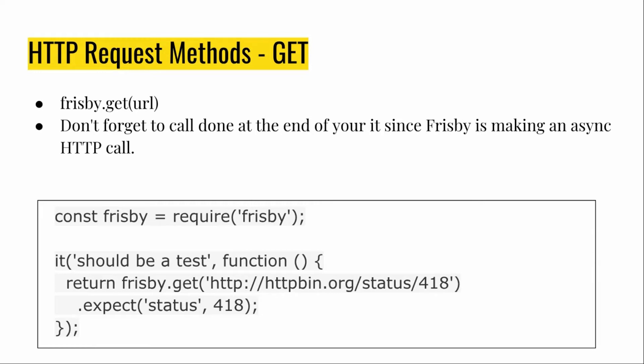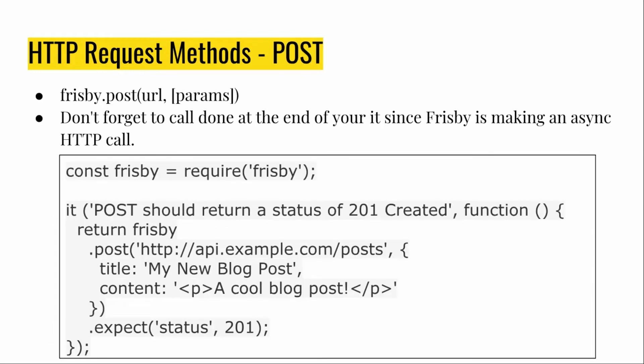This will make more sense in the demo. Similarly, if you want to make POST, PUT, or DELETE requests — basically any HTTP request methods — you do similar things. You just call frisbee with the appropriate method, and for POST you can directly pass your JSON object containing the title, content, and so on.